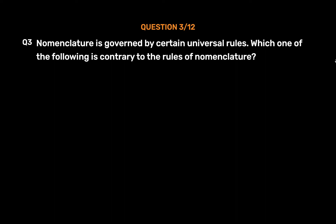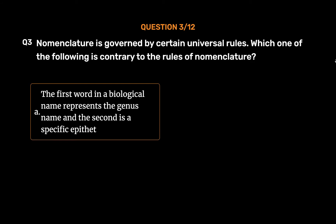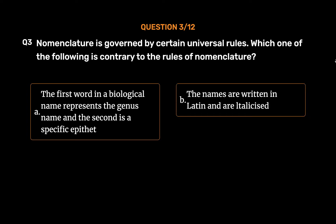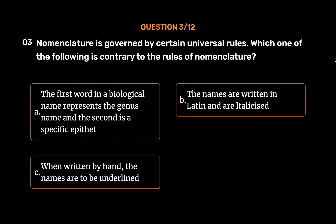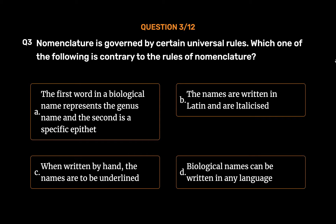Question No. 3. Nomenclature is governed by certain universal rules. Which one of the following is contrary to the rules of nomenclature? Option A: The first word in a biological name represents the genus name and the second is a specific epithet. Option B: The names are written in Latin and italicized. Option C: When written by hand, the names are to be underlined. Option D: Biological names can be written in any language.